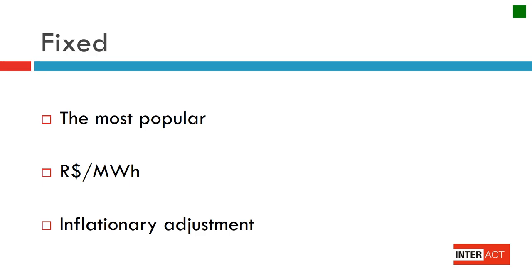The fixed power price is the most popular one. The seller and the buyer negotiate the price denominated in reais per megawatt-hour and they agree upon an inflationary adjustment.